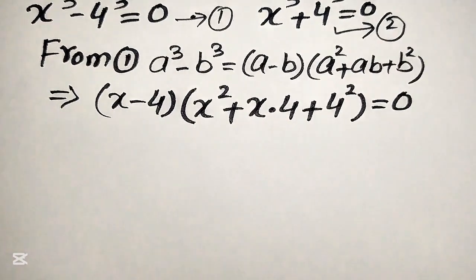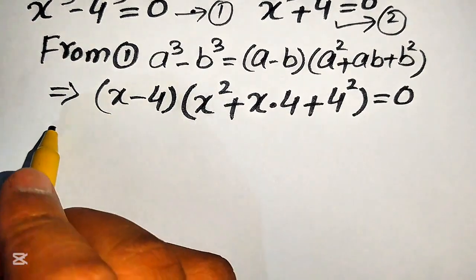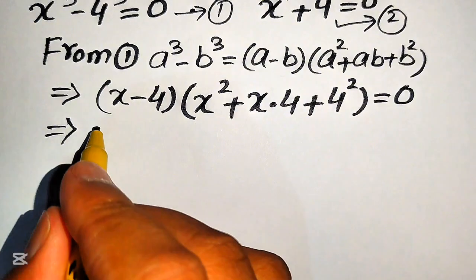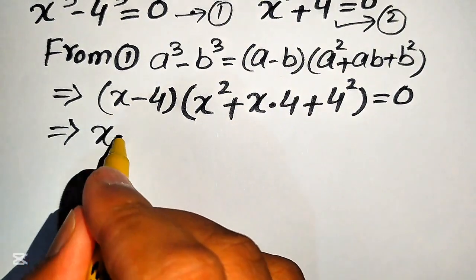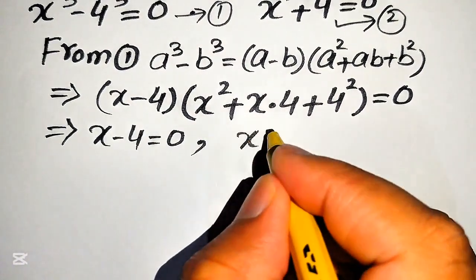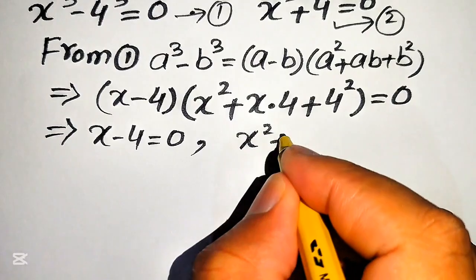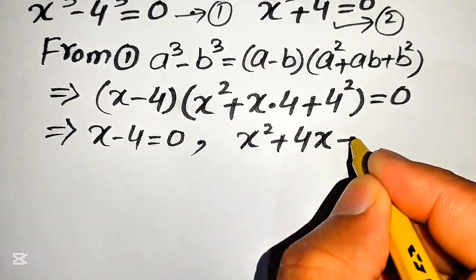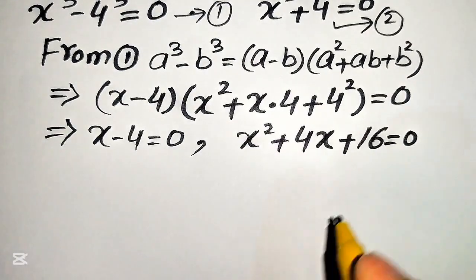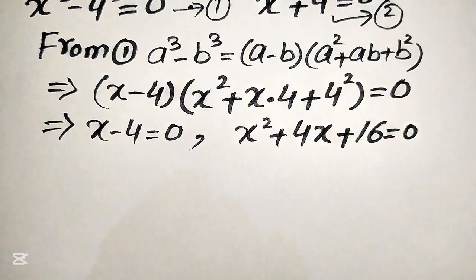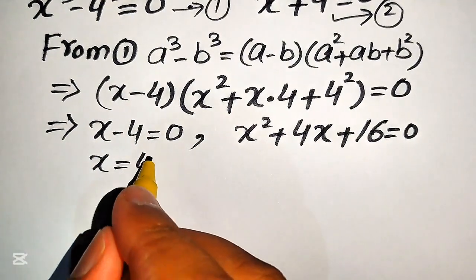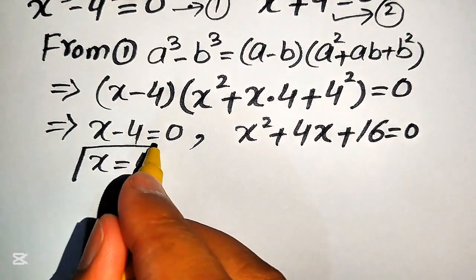We divide this into two cases. The first case is x minus 4 equals to 0. The second case is x squared plus 4x plus 16 equals to 0. From the first case we easily get the value of x is equals to 4.